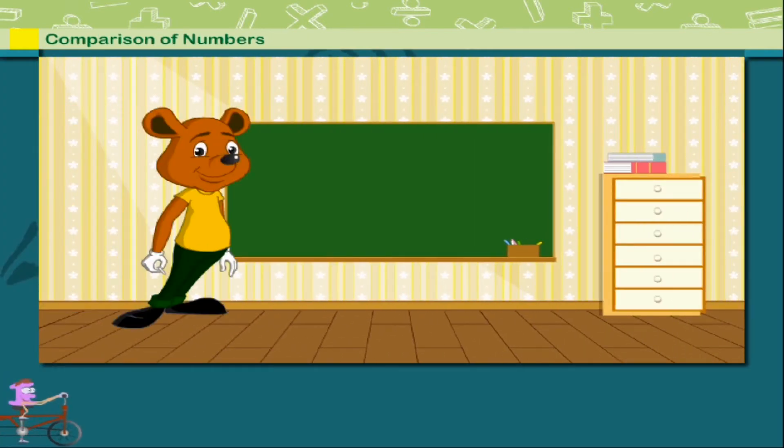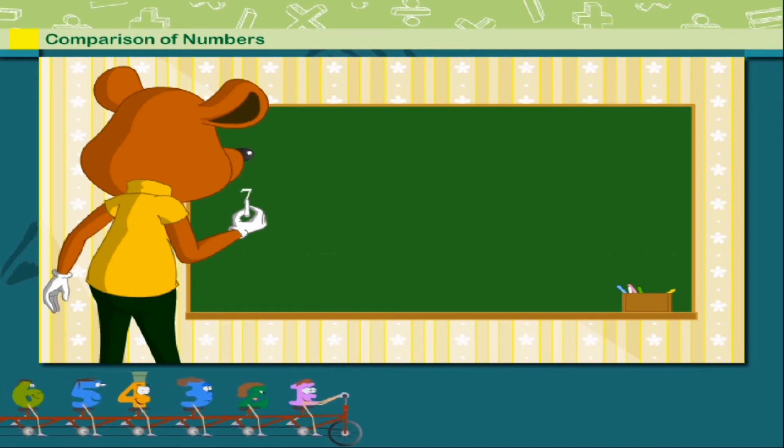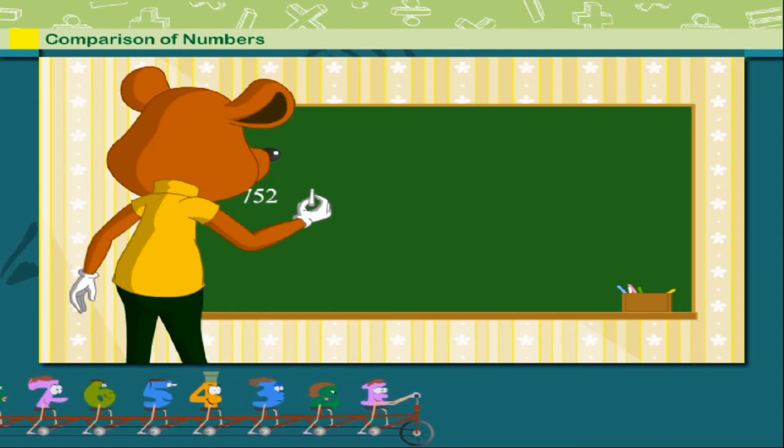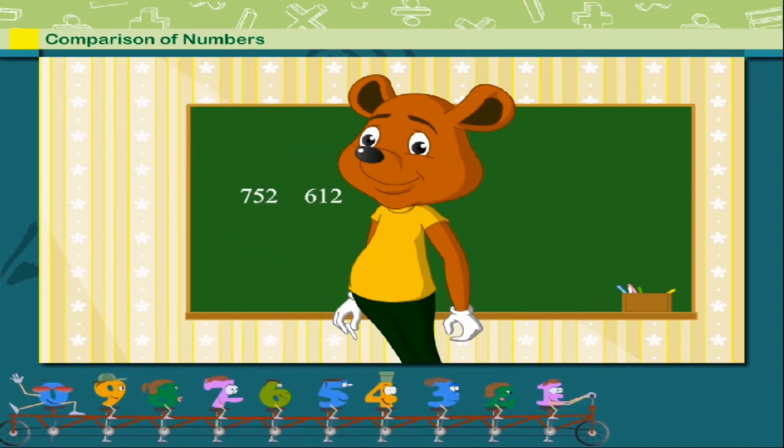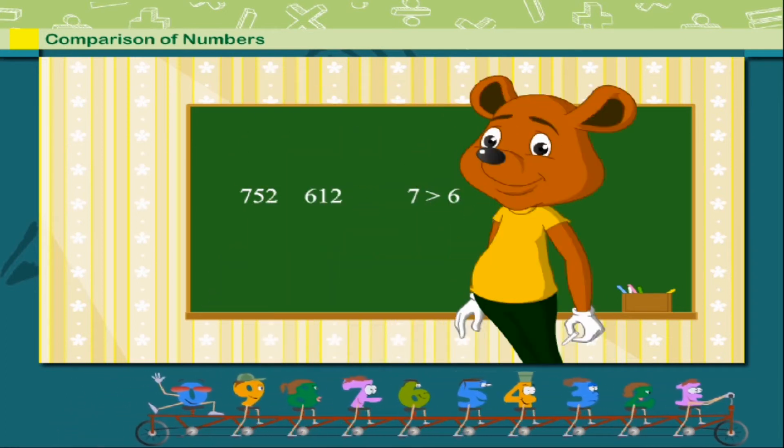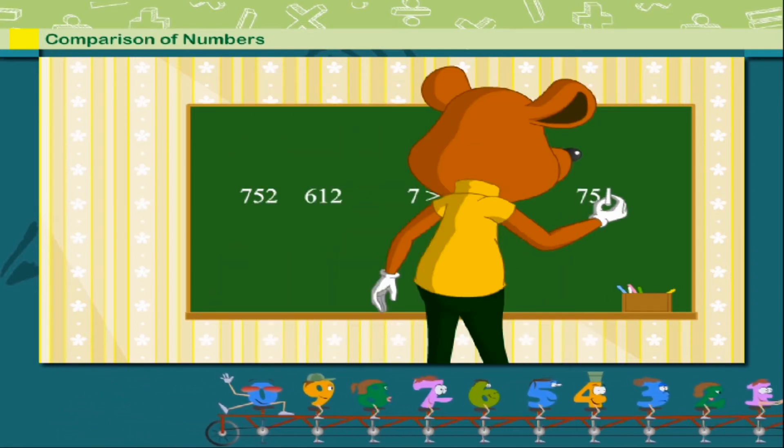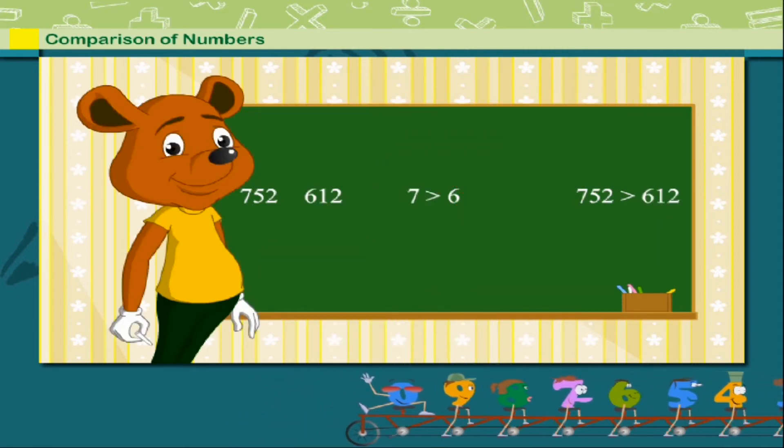Comparison of numbers. Tommy Mouse is on the board to compare three digit numbers. His first set of numbers is seven hundred and fifty-two and six hundred and twelve. He compares the hundreds first. Seven is greater than six. So, seven hundred and fifty-two is greater than six hundred and twelve.